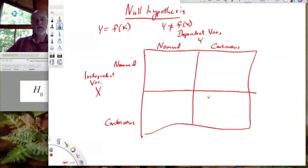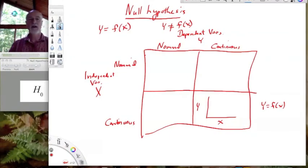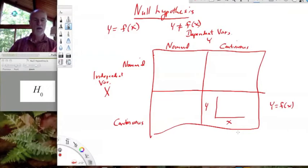And maybe the easiest one is to start in this lower right where we have continuous x and a continuous y. And when we say y is a function of x, what we're really saying is that x matters to the value of y. So that if we actually were to try to plot y versus x, if it matters, if x matters to y, we would get a change in slope. It might be an increase in slope, it might be a decrease in slope.